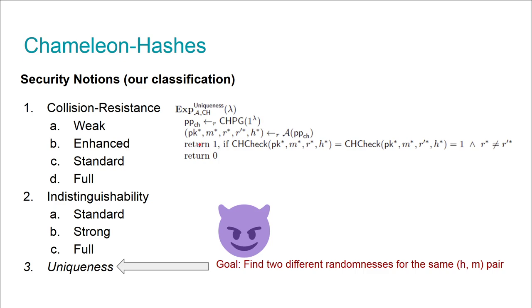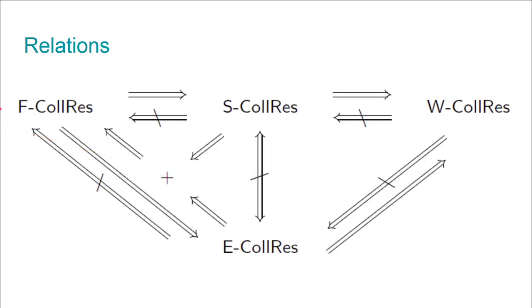Finally, we have our odd brother: uniqueness. It's very rarely used, but we wanted to have a complete picture. The idea behind uniqueness is that for each message-hash pair, exactly one randomness can be found by an adversary, even if the public key can be generated by the adversary. So much for the security properties, now we will show how they are related.